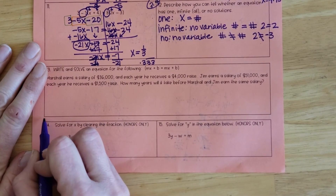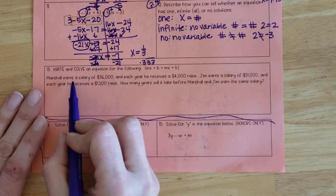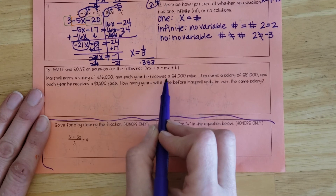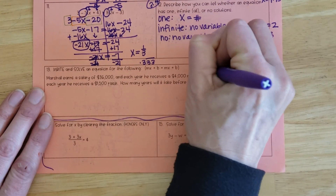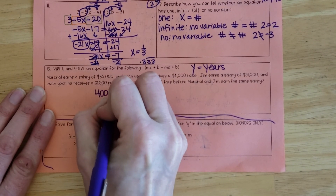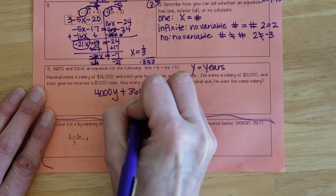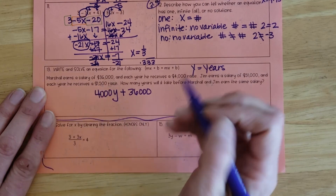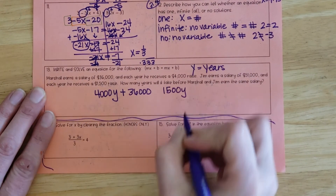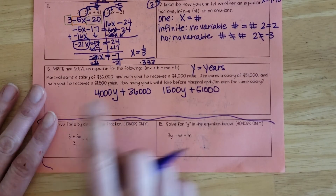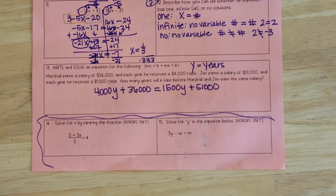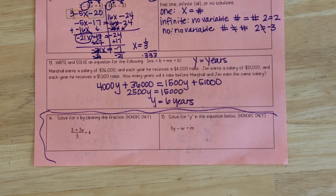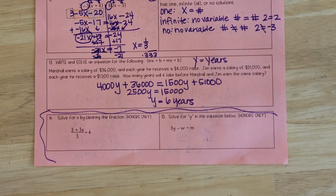Marshall earns a salary of $36,000 and each year receives a $4,000 raise — I'll use Y for years. So Marshall's salary is 4,000Y + 36,000. Jim earns $51,000 and each year receives a $1,500 raise, so Jim's is 1,500Y + 51,000. To find when they earn the same salary, set them equal to each other and solve for Y. In six years they would be earning the same salary.